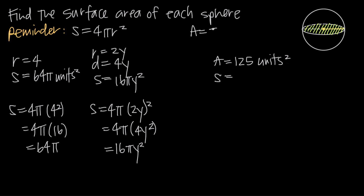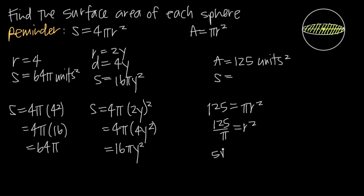The area of a circle is pi r squared, so we set 125 equal to pi r squared. Dividing both sides by pi gives us 125 over pi equals r squared. Taking the square root of both sides, the square root of 125 is 5 root 5, divided by the square root of pi. So r equals 5 times the square root of 5 over pi.